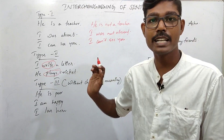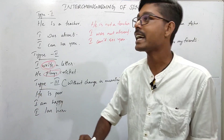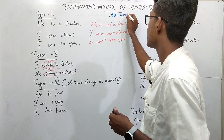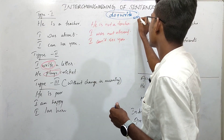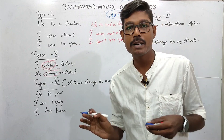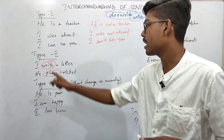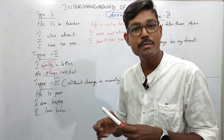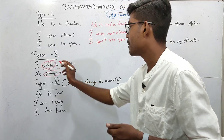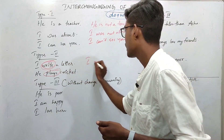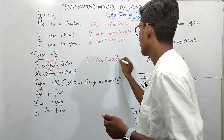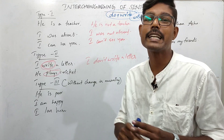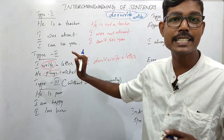The first example: 'I write a letter.' The main verb is 'write.' We split the main verb: do + write. We use the auxiliary verb 'do,' then: 'I do not write a letter.' So the negative of 'I write a letter' is 'I don't write a letter.'